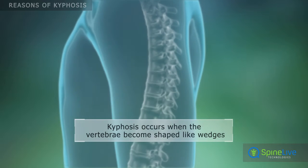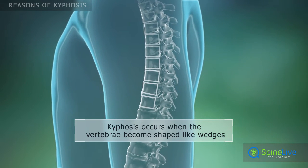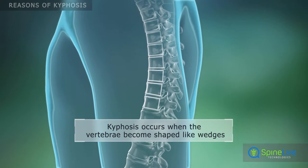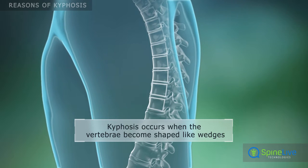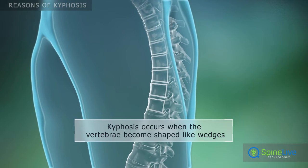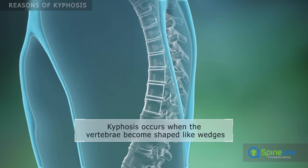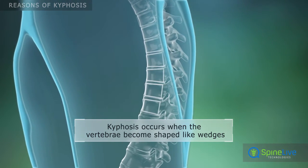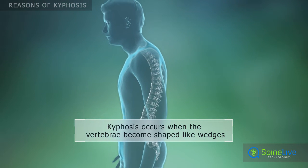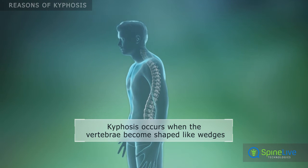The vertebrae of a healthy spine are shaped like cylinders and are stacked one on top of another. Kyphosis occurs when the bones in the thoracic region of the spine become shaped like wedges. This condition can be caused by different problems and diseases.